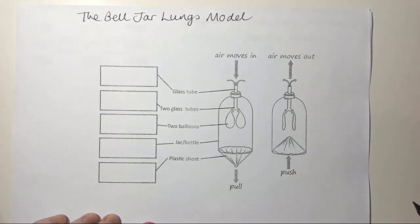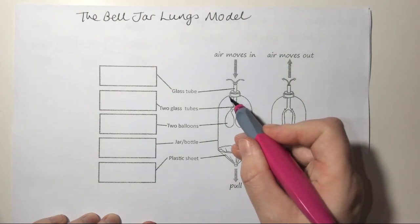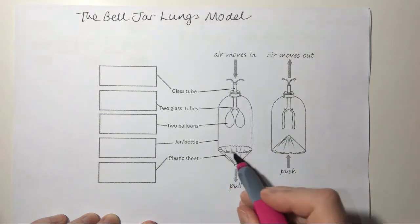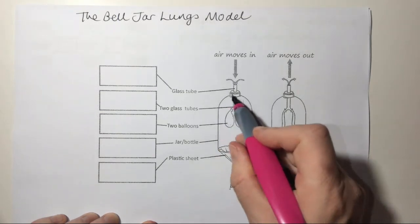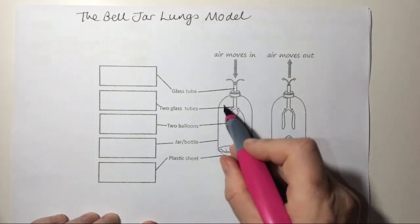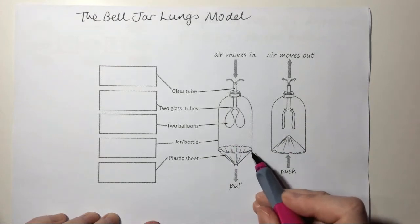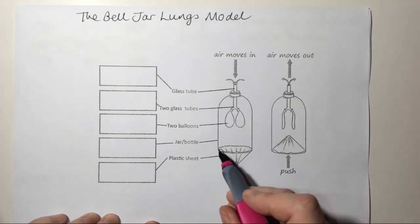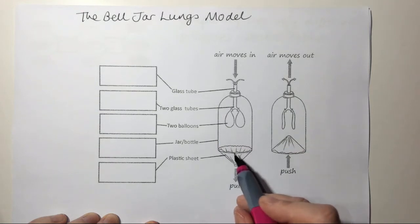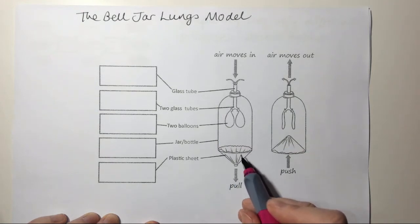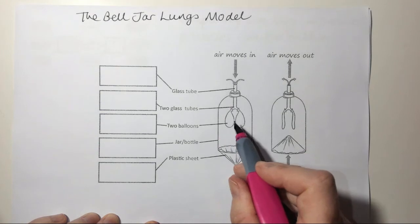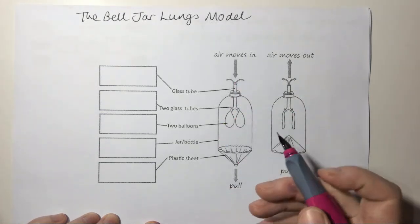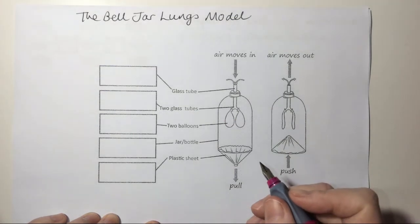It's called the bell jar lungs model because this little thing here is a jar — you might have seen these decorative jars made of glass — and it's called a bell jar because it's got that bell shape. We can make them out of a plastic bottle like a fizzy drinks bottle. Cut the top off, put a piece of plastic here, a couple of balloons, a couple of straws and you can make your own model. There are lots of places on the internet that tell you how to do this.